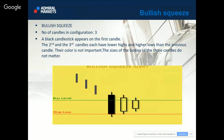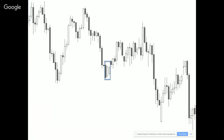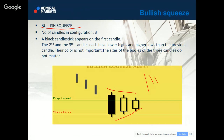Bullish squeeze is another non-standard pattern, but it's a very, very good pattern to trade. It's a three-candle configuration. A black candlestick appears on the first candle. The second and the third candles each have lower highs and lower lows than the previous candle — but their color is not important. It's actually a squeeze, like this. When you see this, you might assume that there will be a continuation to the upside. It's called a bullish squeeze — very easy.